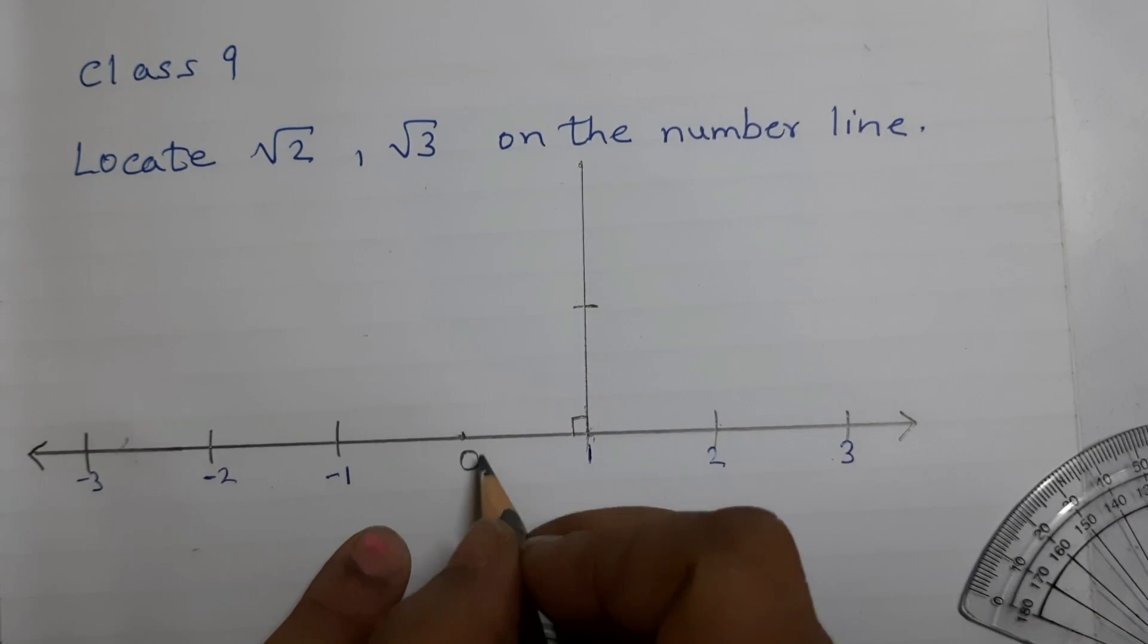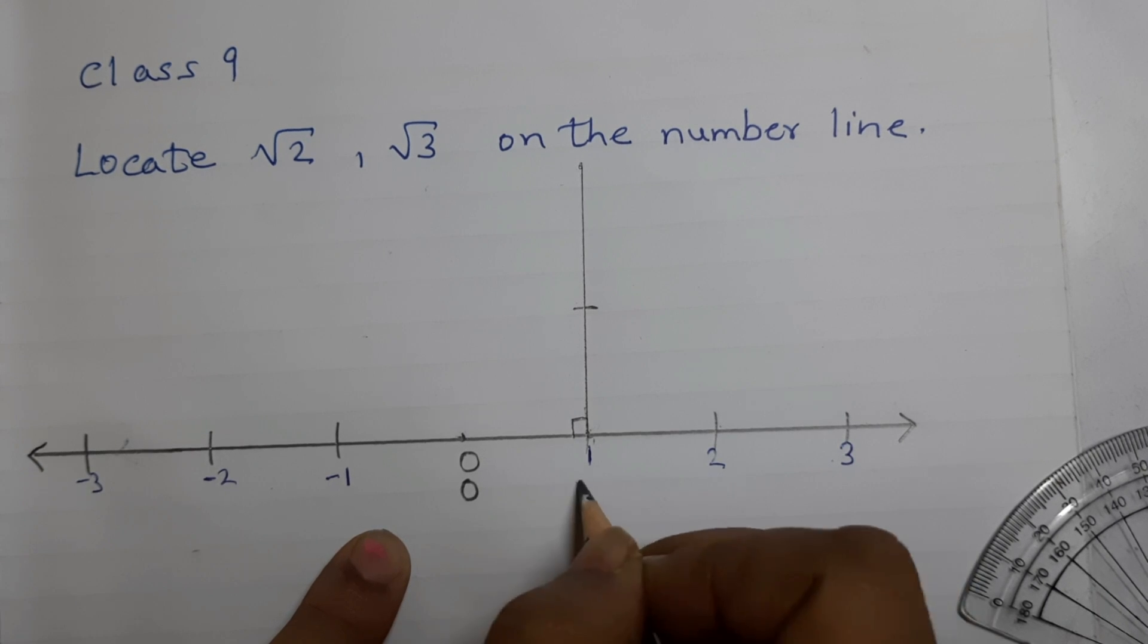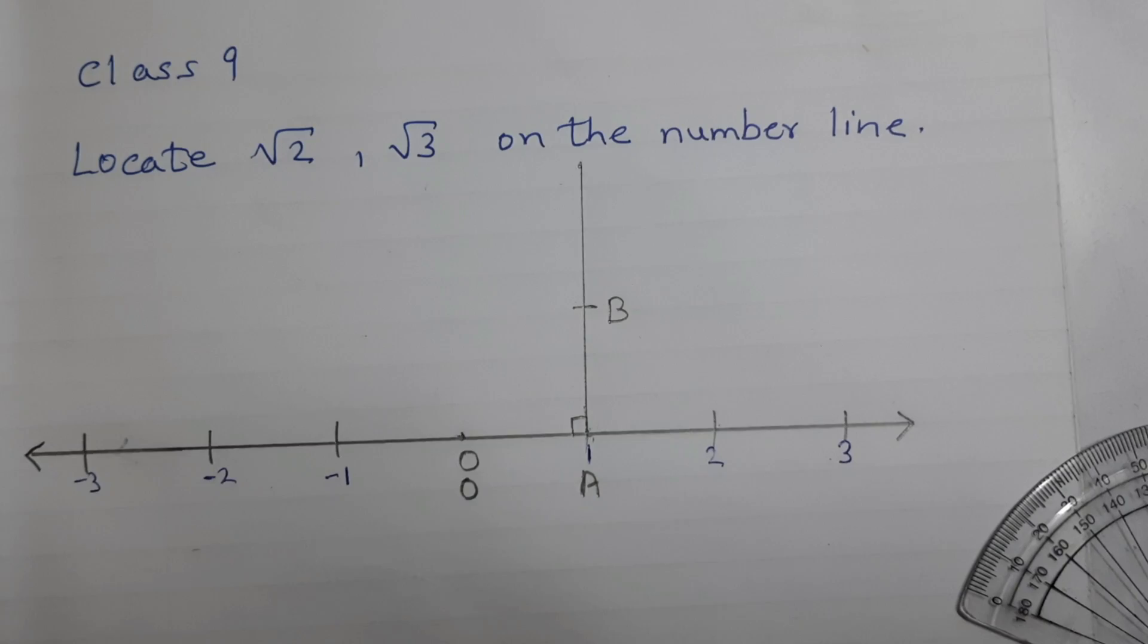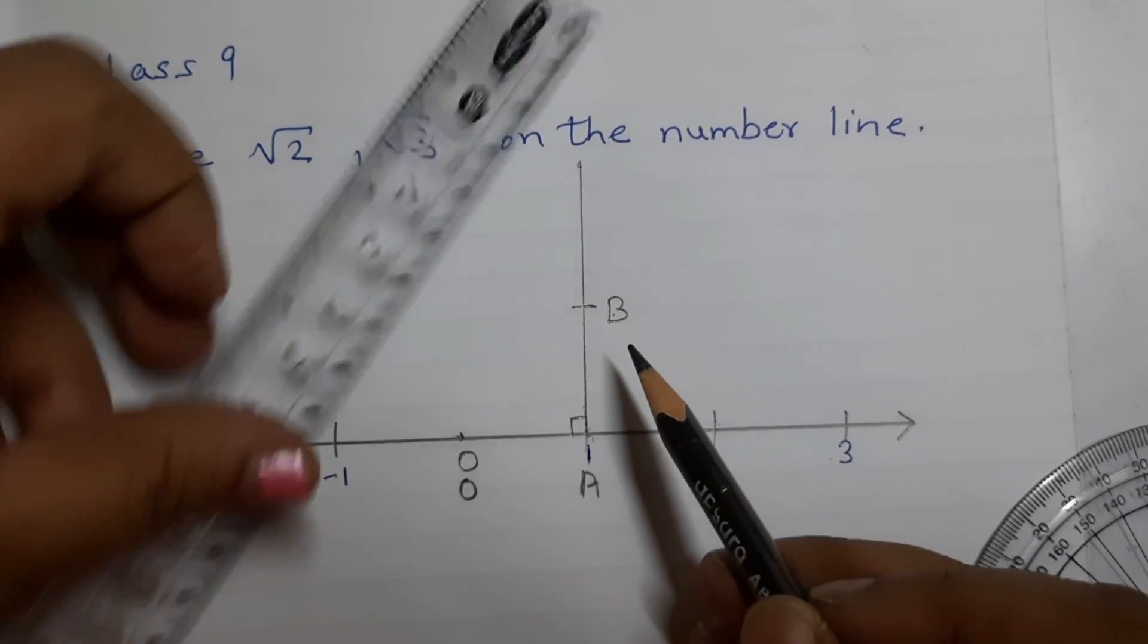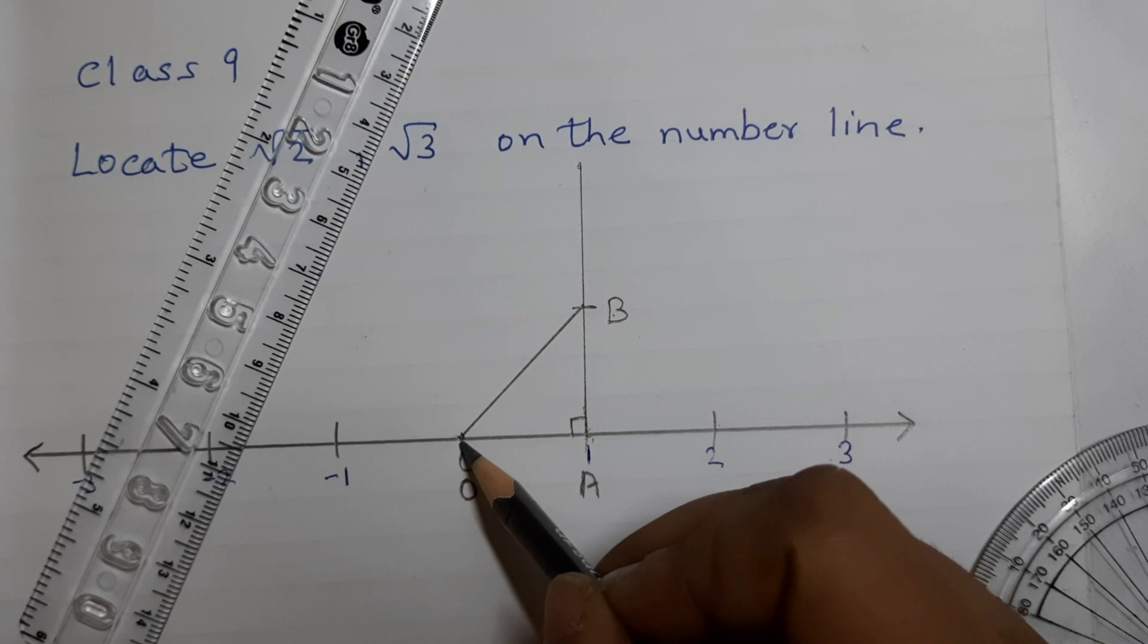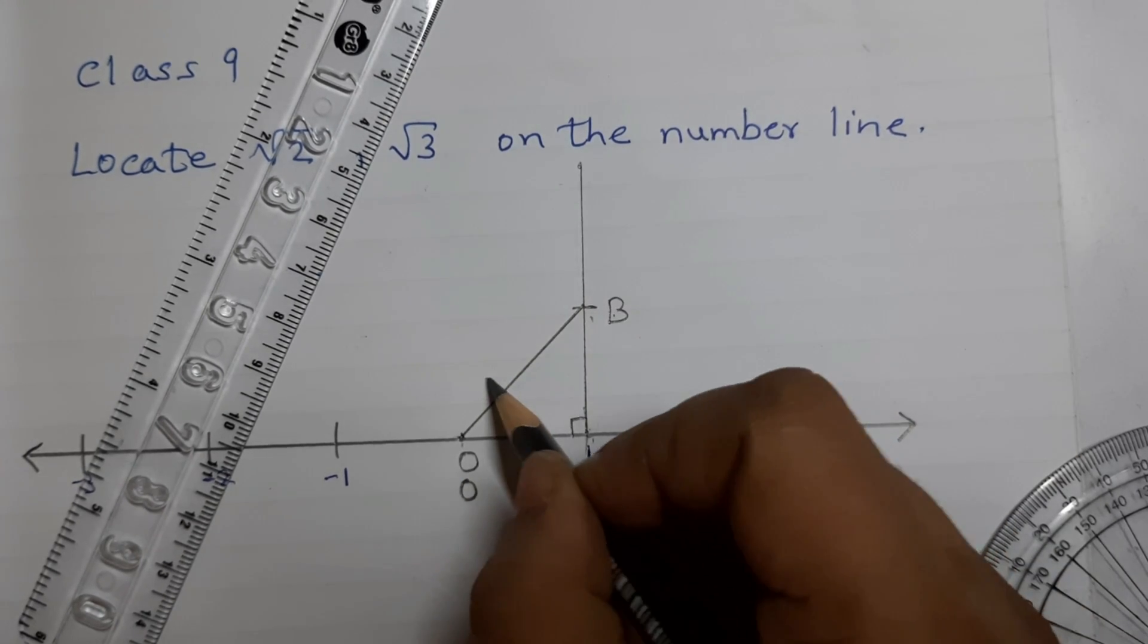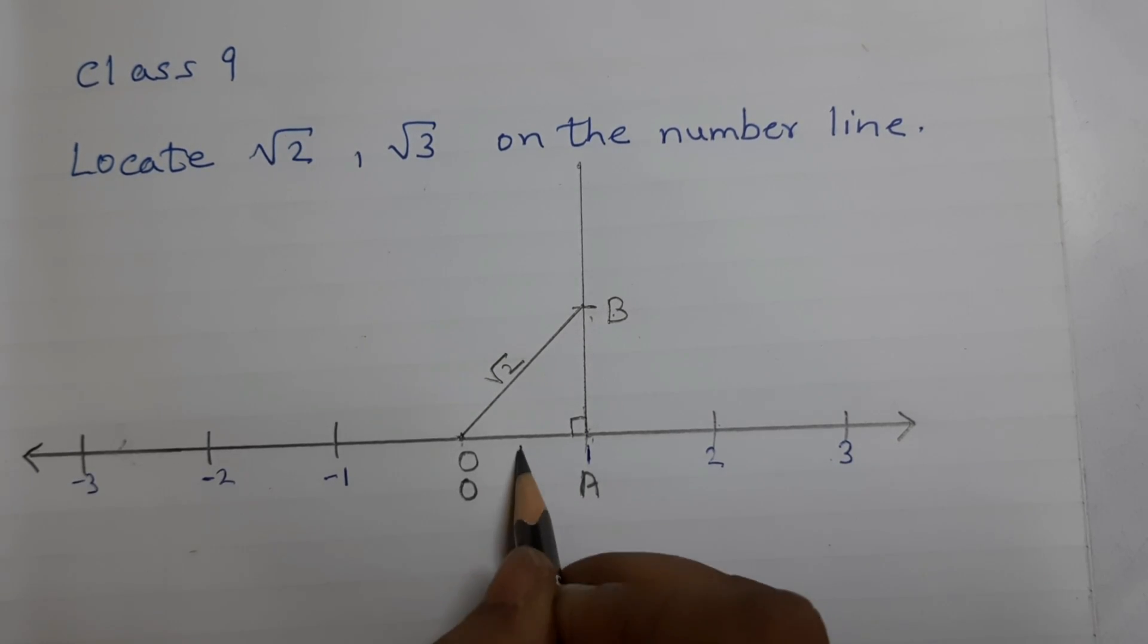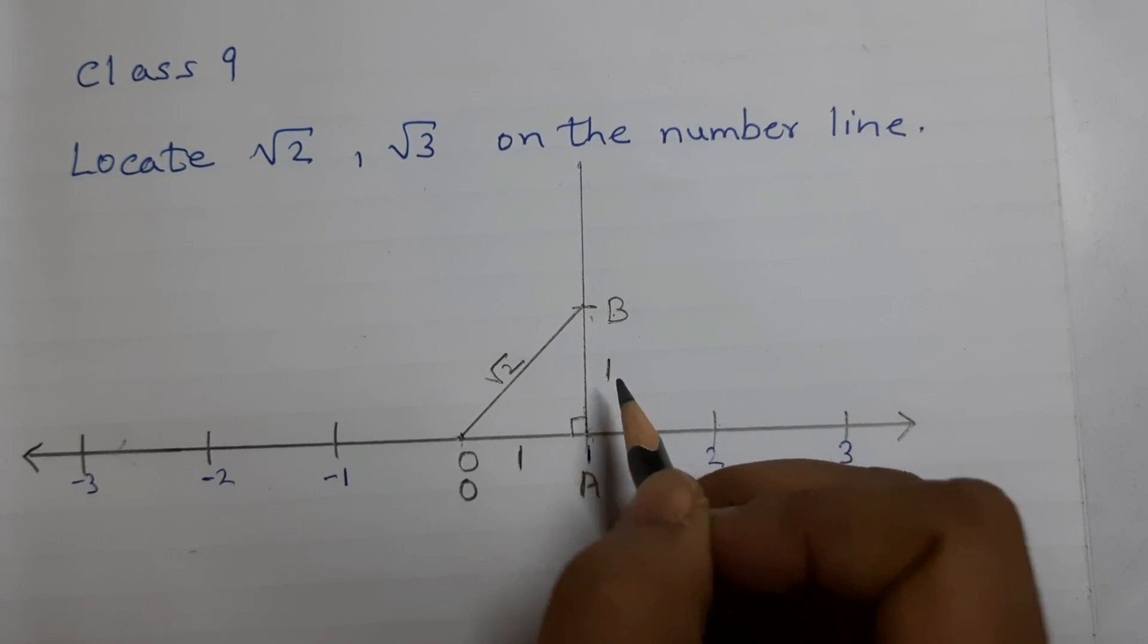Let's say this is O, this is A and this is B. Join O, B. The length of O, B is square root of 2. And how do we know this? This is 1 unit and this is also 1 unit.